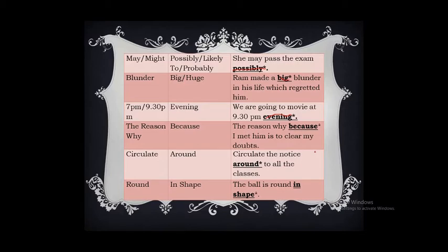'The reason why... because' — we use 'the reason why' to explain a cause, and 'because' also introduces a reason. So we should not use both together. The correct forms are: 'The reason why I came late is so and so' or 'I came late because...' The correct sentence using 'reason why' is: 'The reason why I met him is to clear my doubt.'